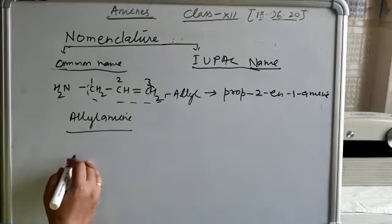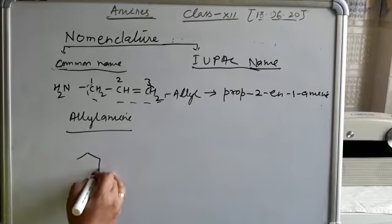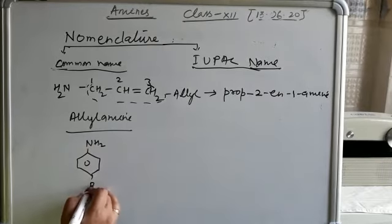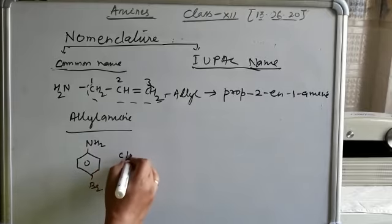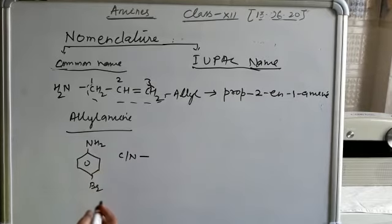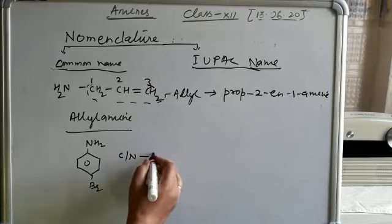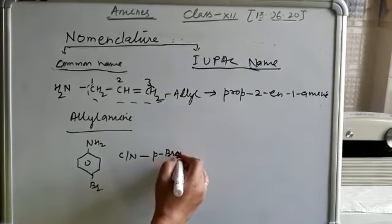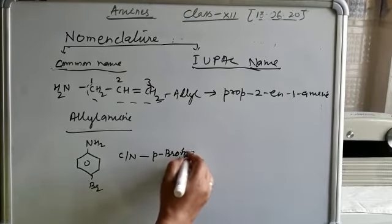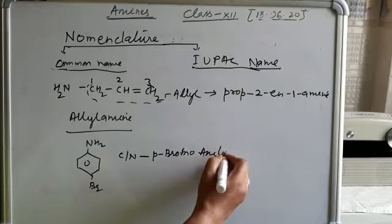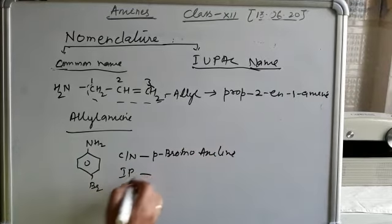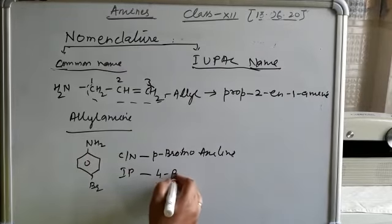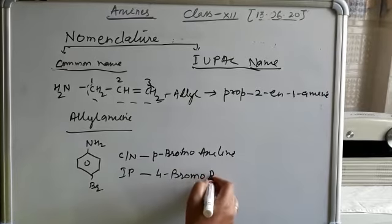Another example: suppose we have a benzene ring with NH2 and a bromo group at the para position. The common name uses ortho/para notation — so it is para-bromoaniline. For the IUPAC name, the bromo is at position 4, so it is 4-bromobenzenamine.